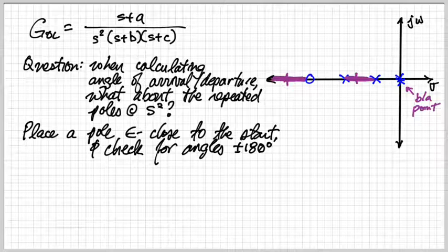You know that whenever you're looking for the angles for the breakaway points, the approach is to place a pole epsilon close to either the start or the ending and then check to see where angles equal 180 degrees.